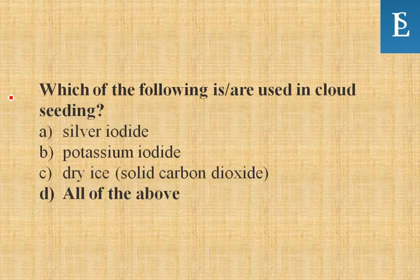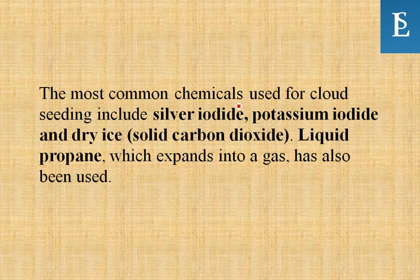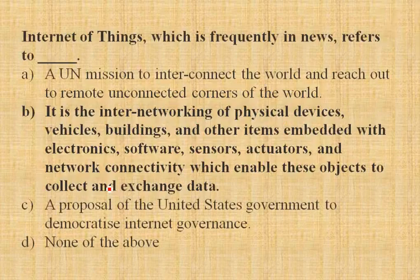Which of the following are used in cloud seeding? Silver iodide, potassium iodide, and dry ice (solid carbon dioxide) — all of them are used for cloud seeding. The most commonly used chemicals for cloud seeding include silver iodide, potassium iodide, and dry ice. Liquid propane, which expands into gas, has also been used.